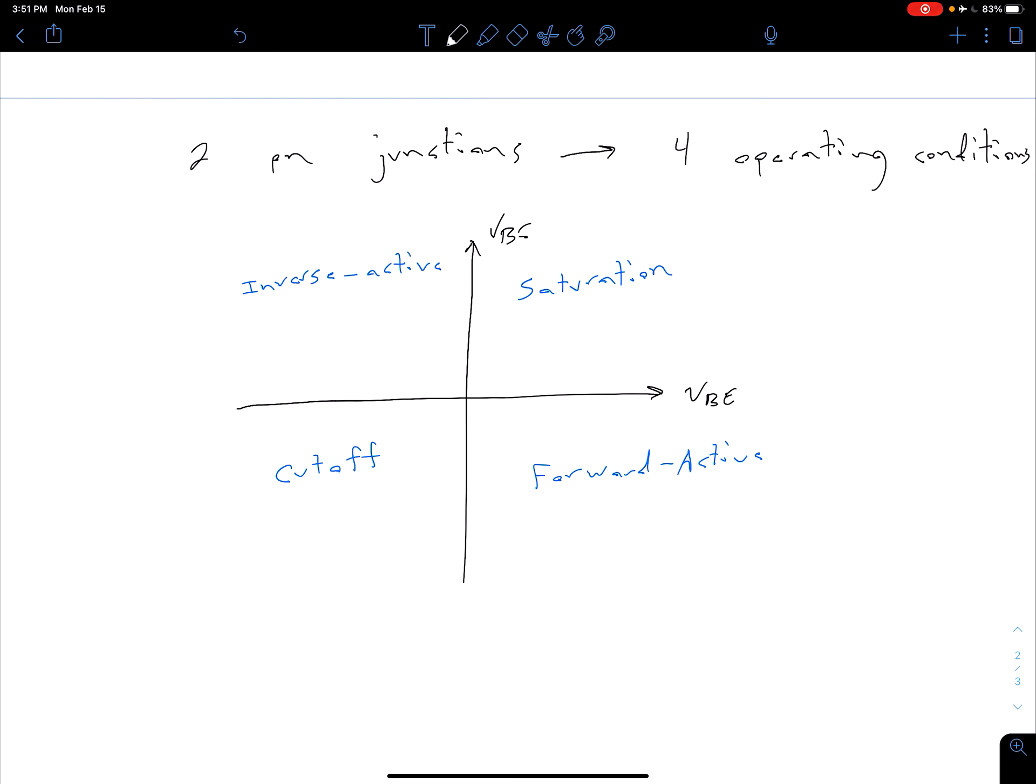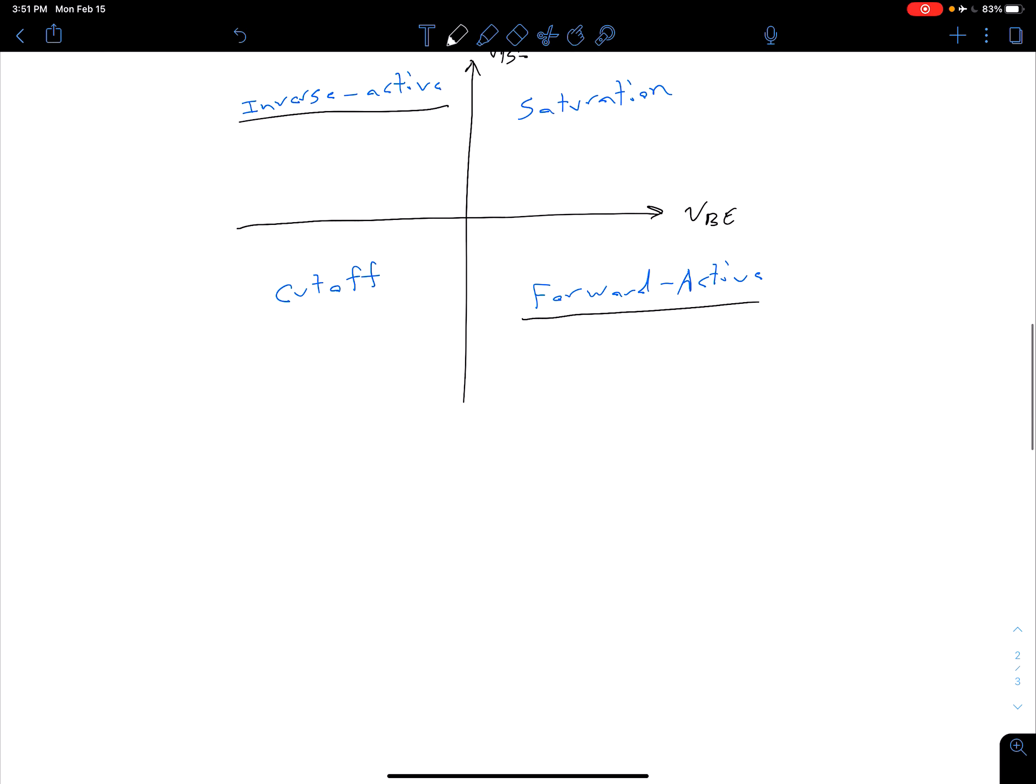All we've done is we've switched. Now our VBC is forward biased and our VBE is reverse biased. At first glance you might say, okay, we've just switched. We have one junction forward bias, one junction reverse bias in both cases, so the operation should be pretty much the same. But our devices aren't symmetrical, so ultimately our inverse and forward active are going to behave differently.